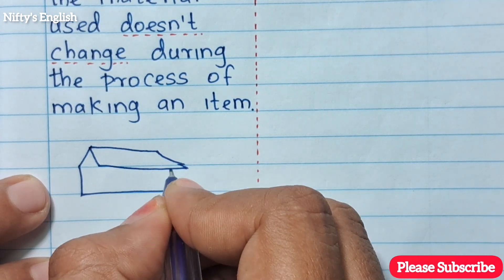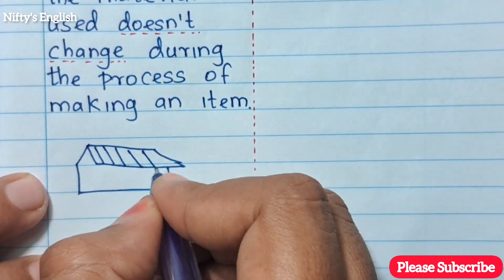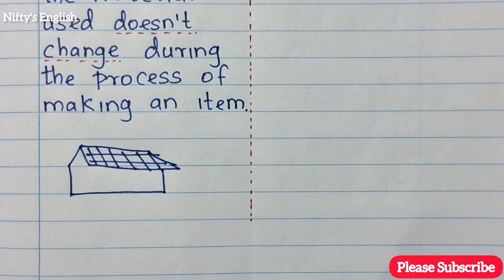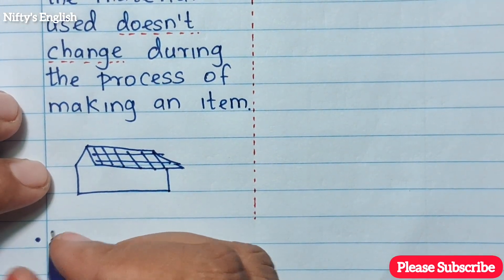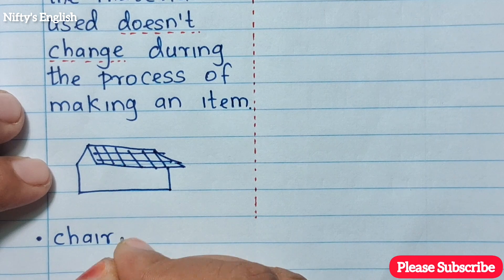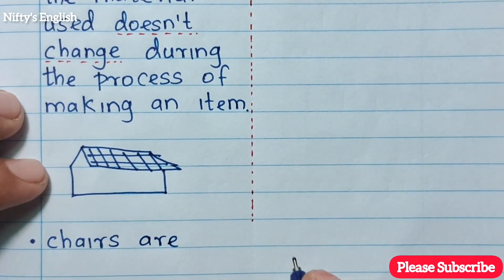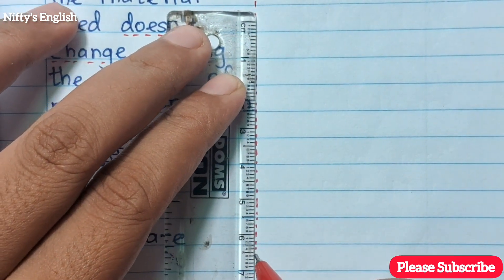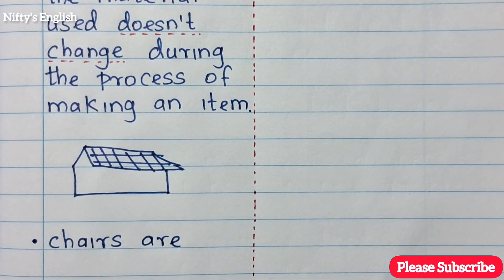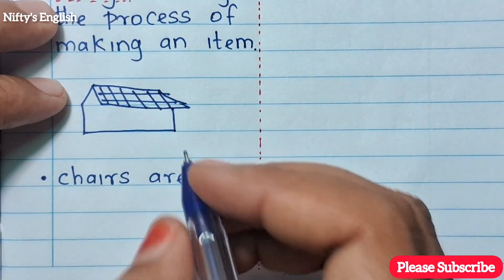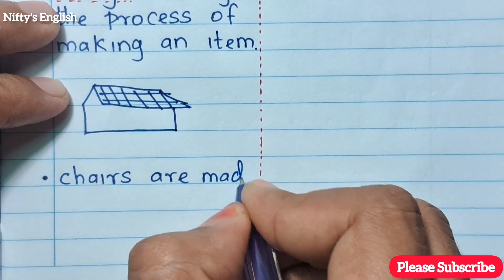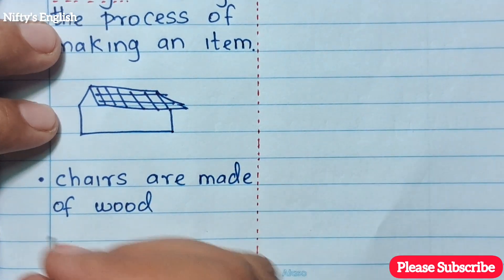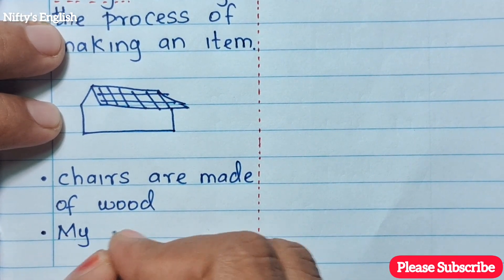Example of made of: chairs are made of wood. Another example of made of: my house is made of bricks.